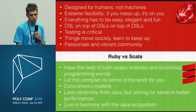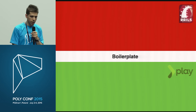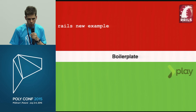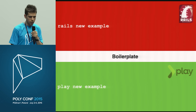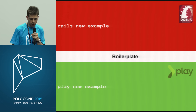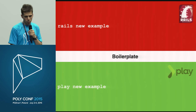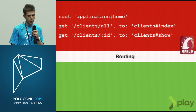What about Rails and Play? These are frameworks for web development. We can easily create boilerplate — an application skeleton using `rails new example`. The same we can do with Scala; Play is very similar to Rails — we can do `play new example`. What about routing in both applications?